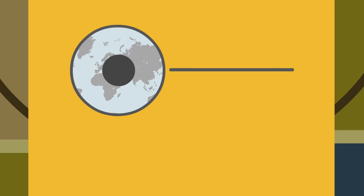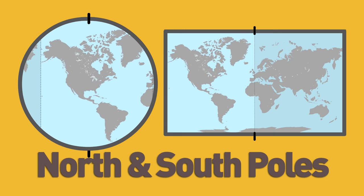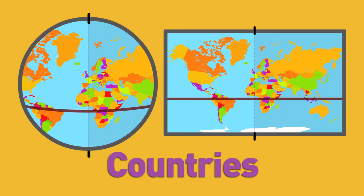If you're looking at a globe or a map of the world and you want to understand it, you've got to know these hemispheres, north and south poles, equator, oceans, continents, and lots of countries.